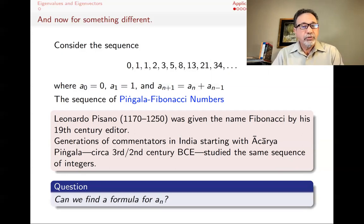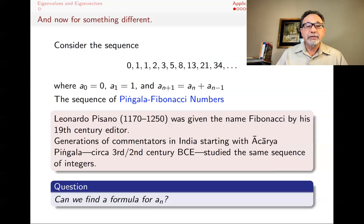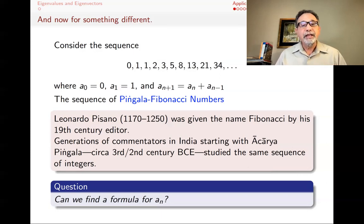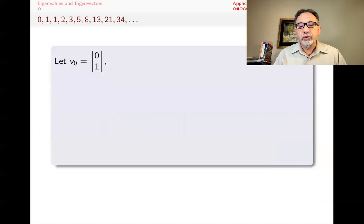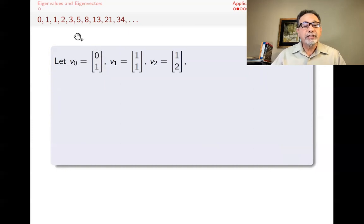The question for this talk is: can we find a formula for An using matrices? What we're going to do is construct 2 by 1 vectors: V0 is (0, 1), V1 is (1, 1), V2 is (1, 2), and so on — these are consecutive elements of the Pingala-Fibonacci sequence. So V0 contains the 0th and 1st elements, V1 contains the 1st and 2nd, V2 contains the 2nd and 3rd, and so forth.